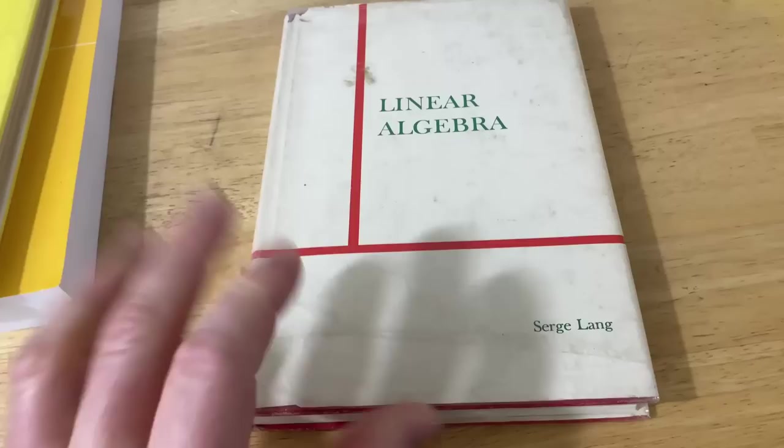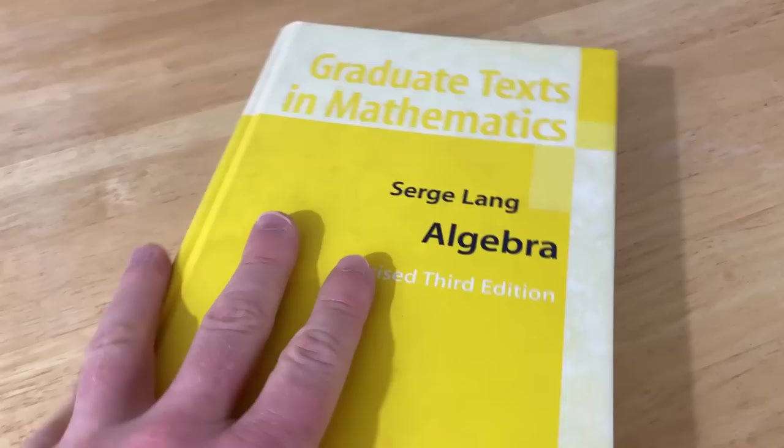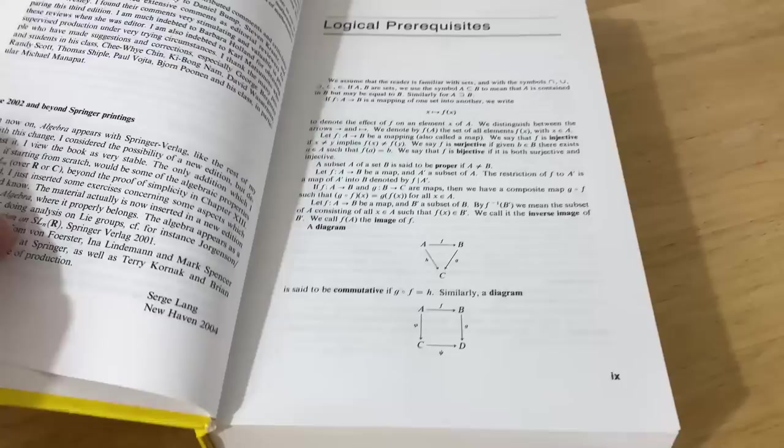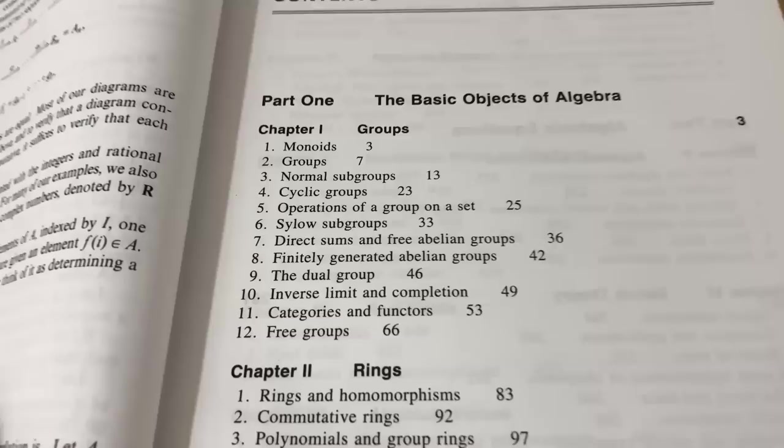This next book is a book that gets lots of criticism. I've heard people say stuff like, you can't learn algebra from this book. And I think it's a great book. I remember the first time I heard someone say that, I was kind of blown away. And I guess I did already know some abstract algebra before I picked up this book. But I found it to be refreshing both as an undergrad and as a grad student.